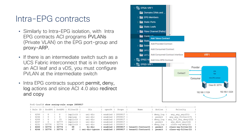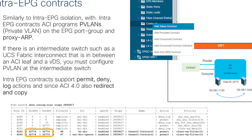Now let's talk about intra-EPG contracts, the next level of granularity. Instead of dropping or permitting all traffic, you can allow specific Layer 4 protocols and ports by creating a contract. When you add an intra-EPG contract, ACI automatically programs private VLANs and proxy ARP — you don't need to add those manually. The policy CAM shows the source and destination EPG as the same EPG number, and the intra-EPG contracts are programmed with priority 1, which is even higher than intra-EPG isolation.